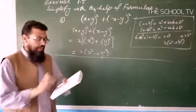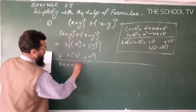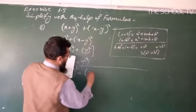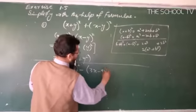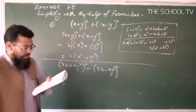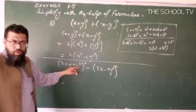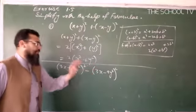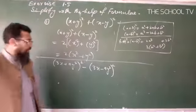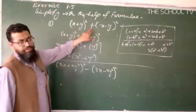Now we have another part: (3x + 9y)² minus (3x - 9y)². This is the next question we need to simplify.